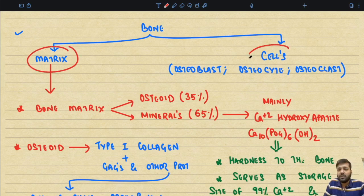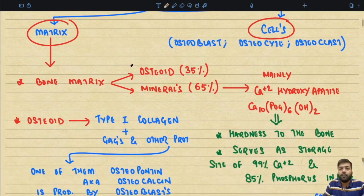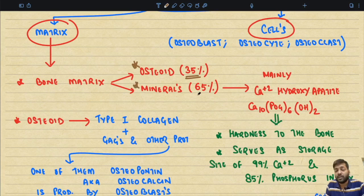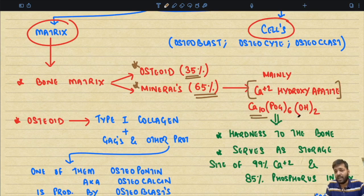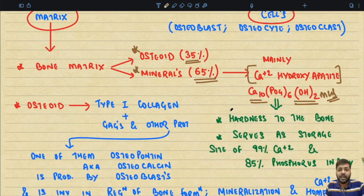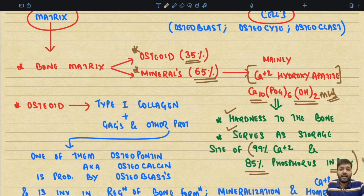A bone has two important components: the bone matrix and cells. The bone matrix is made of osteoid, which constitutes 35% of the bone, and minerals, which constitute 65% of the bone matrix. The most important mineral constituent is calcium hydroxyapatite — formula: calcium₁₀, phosphate₆, hydroxide O₂ — which is very important for MCQs.